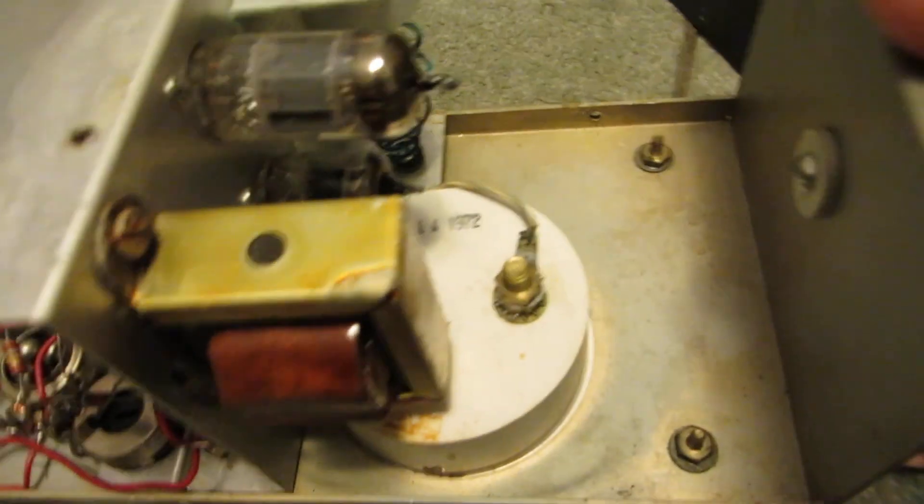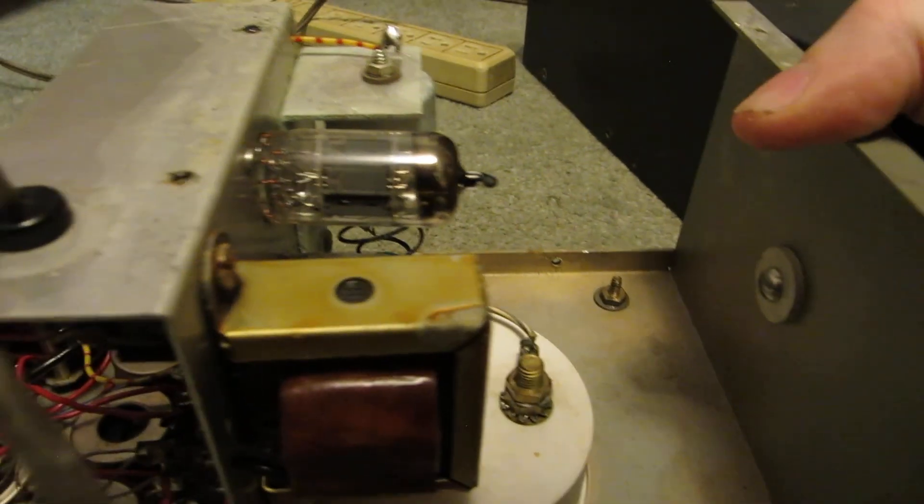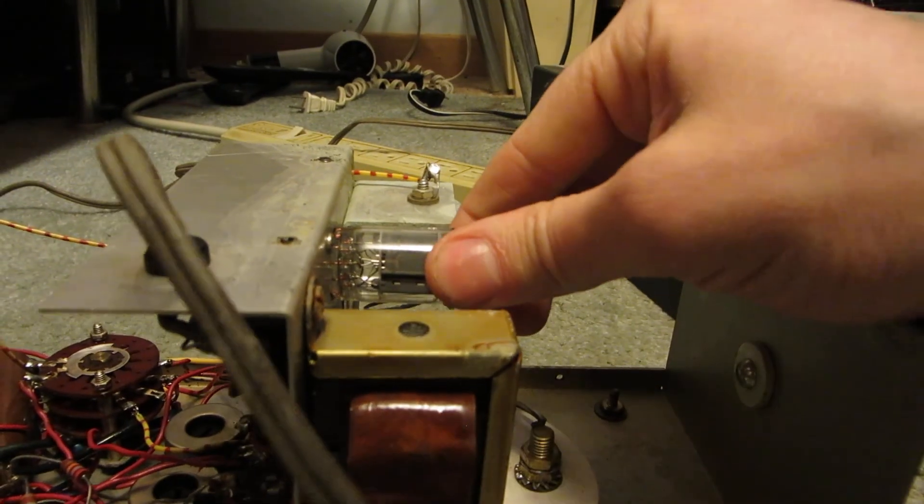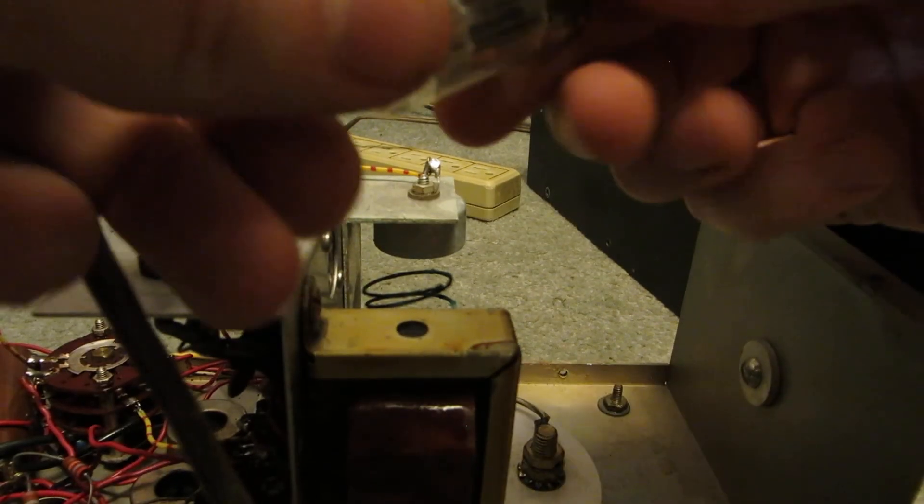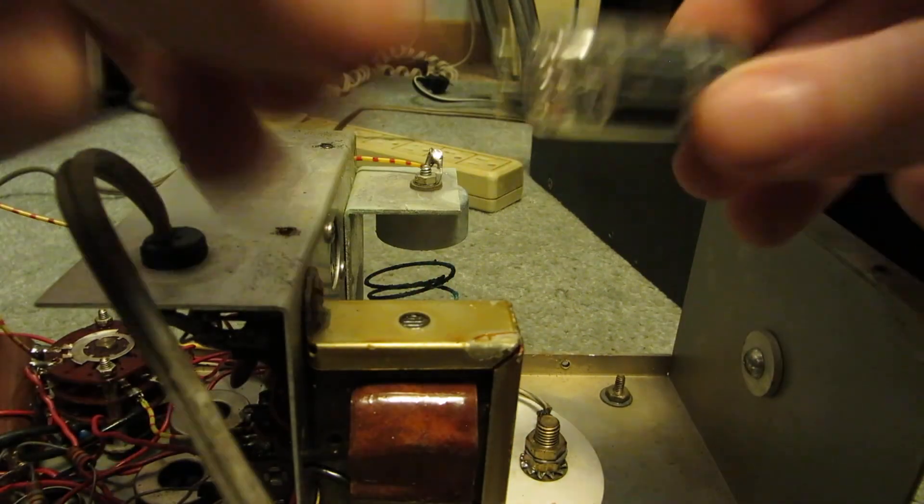But, this is what we got. So it's a vacuum tube multimeter, so there are two tubes, a 6AL5 and I can't remember what this one is, a 12AU7A. Pretty standard tubes.